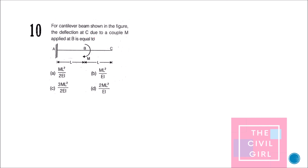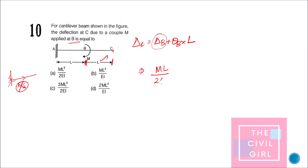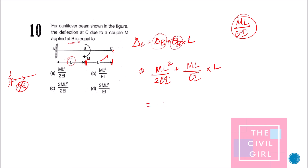Last question: for the cantilever shown, a couple M is applied at B. What is the deflection at C? The deflection at C equals the deflection at B plus θ_B times the length BC. With length L from fixed end to B, δ_B = ML²/2EI and θ_B = ML/EI. So deflection at C = ML²/2EI + (ML/EI) × L = ML²/2EI + ML²/EI = (3/2)(ML²/EI). The answer is option C.